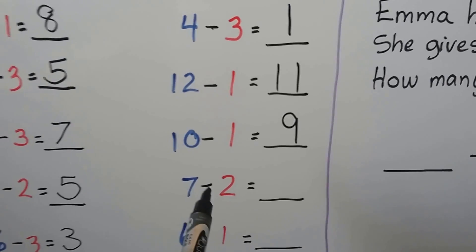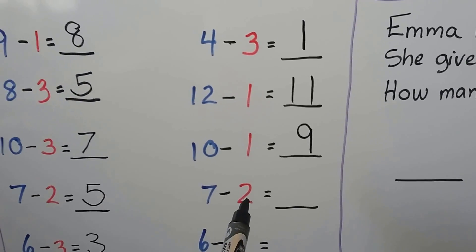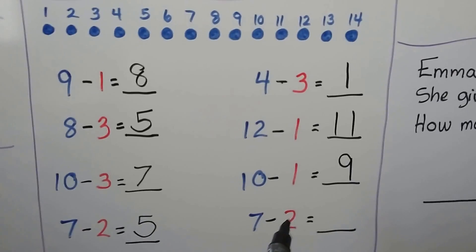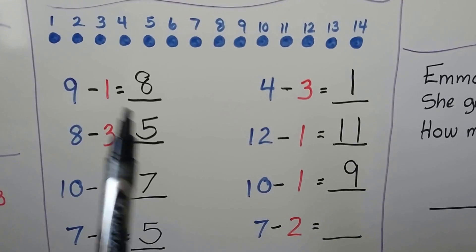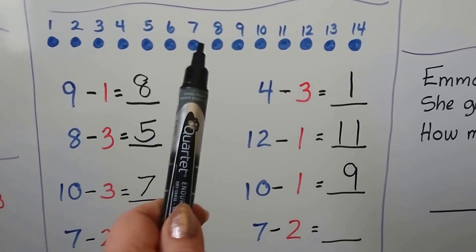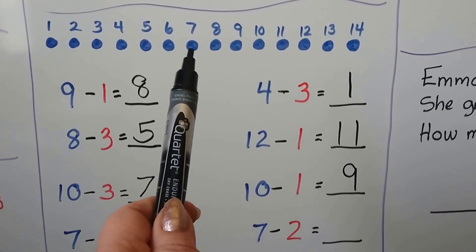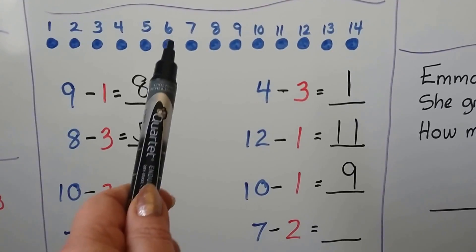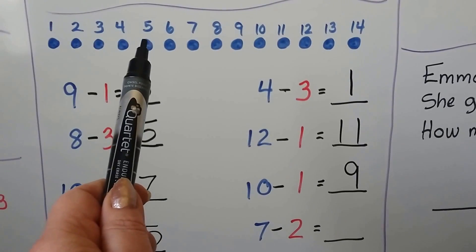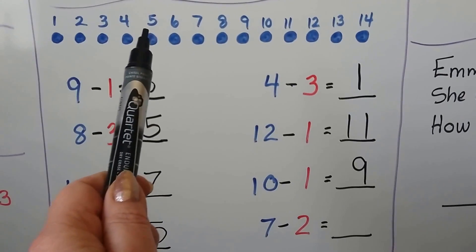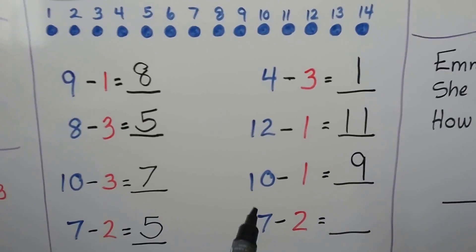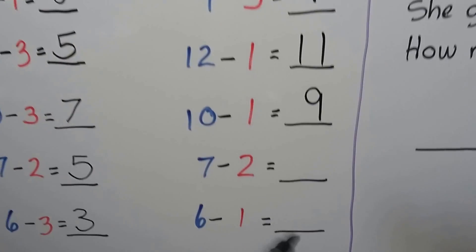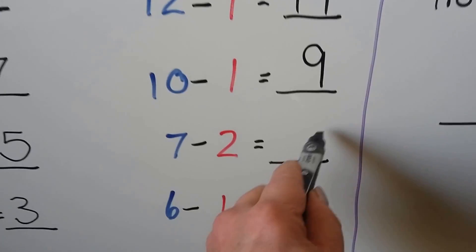7 minus 2. We start at the 7 and count back 2. Let's find the 7 — there it is. Now let's count back 2: 1, 2. That brings us to 5. 7 minus 2 is equal to 5.